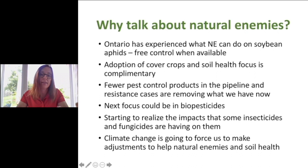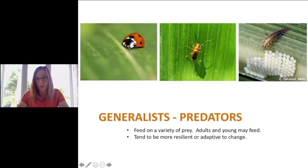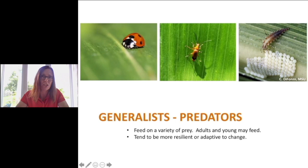There are three main natural enemy groups: predators, parasitoids, and pathogens. The generalist predators just feed on anything they can recognize as prey — usually both the adult and the young (typically larva) feed on hosts. They tend to be a bit more resilient to change. One of the key ones I'm noticing more prevalent this year are soldier beetles. The adults feed on pollen, nectar, but also insect eggs and smaller insects like aphids and caterpillars. Their larva are also predators but for below-ground pests.